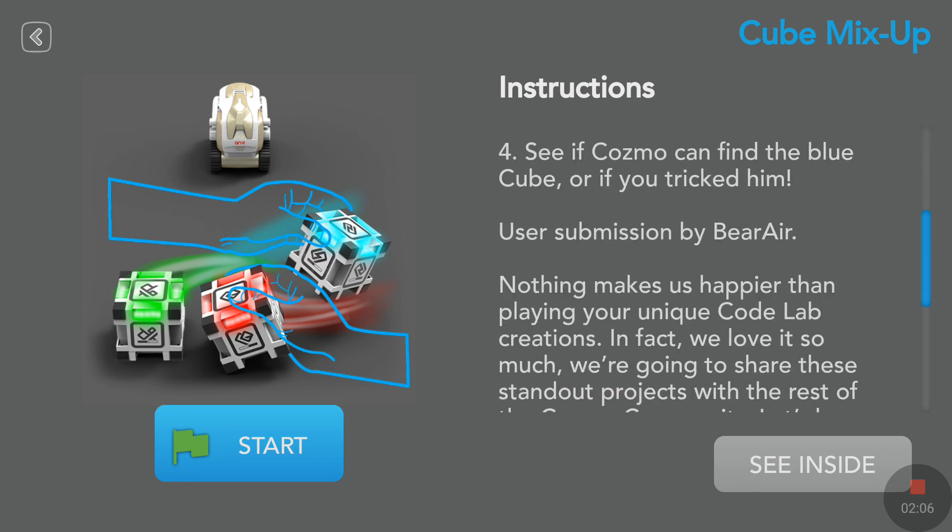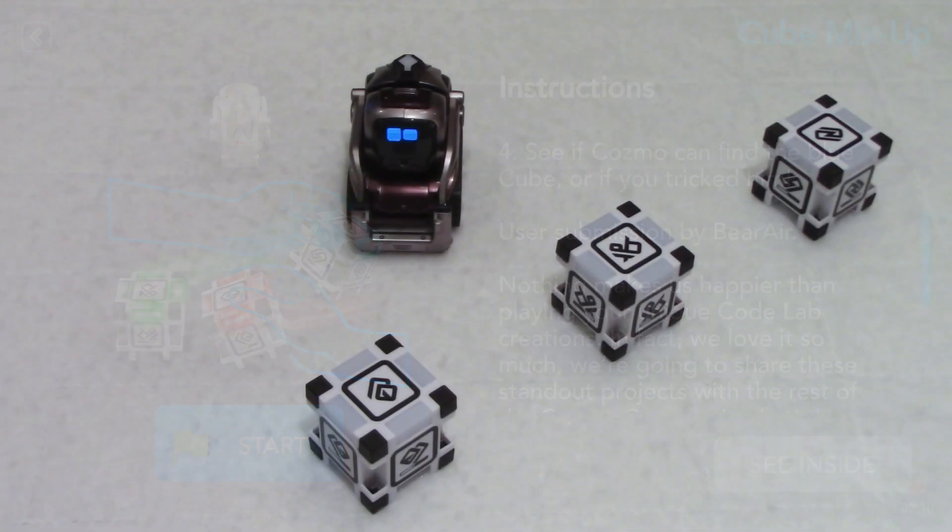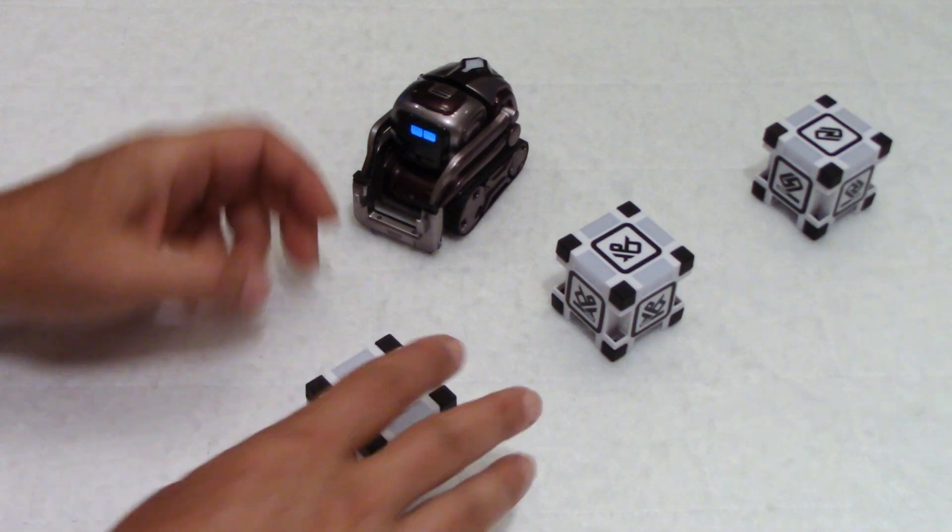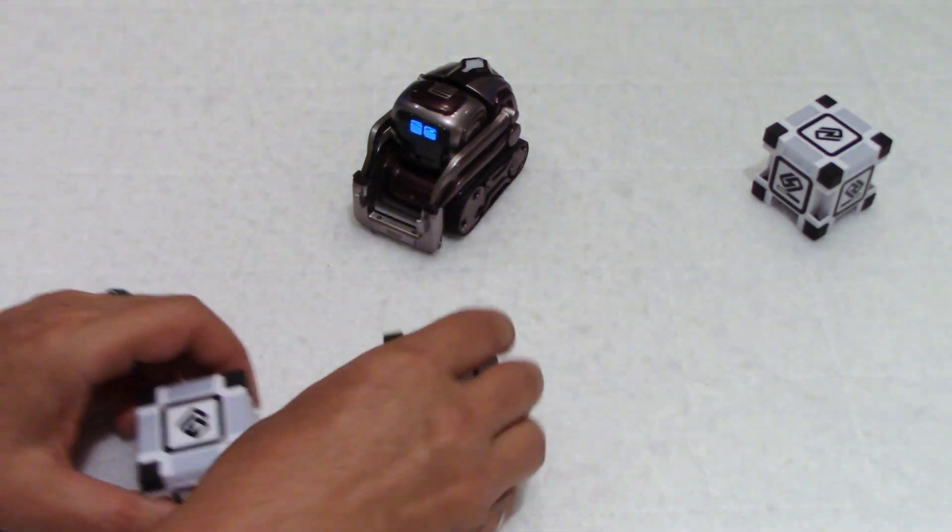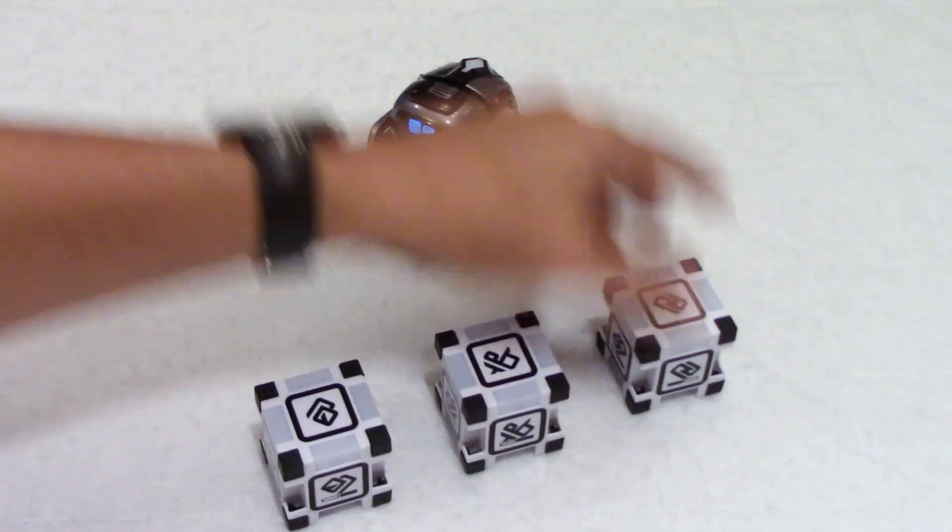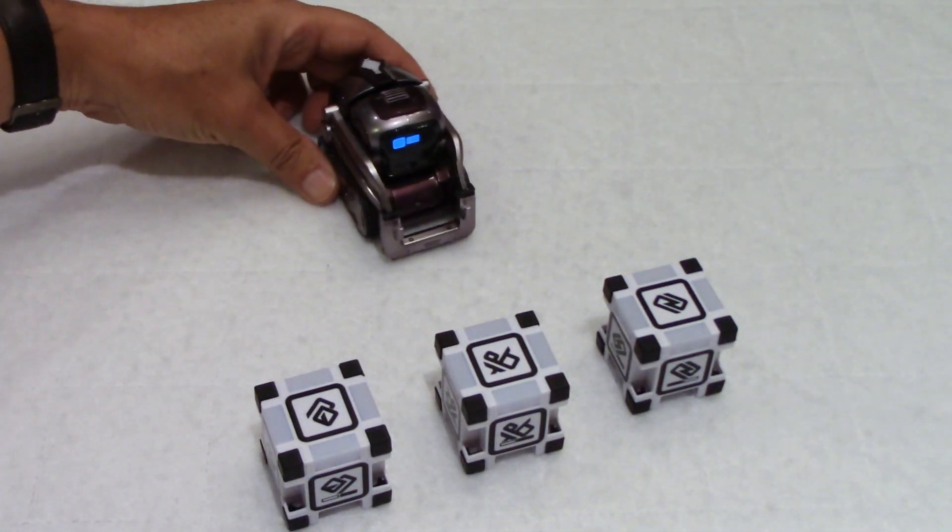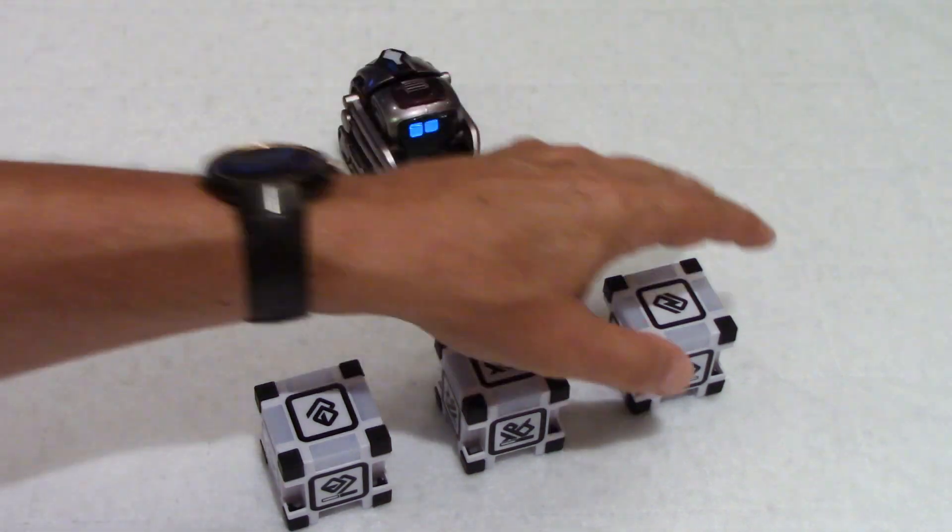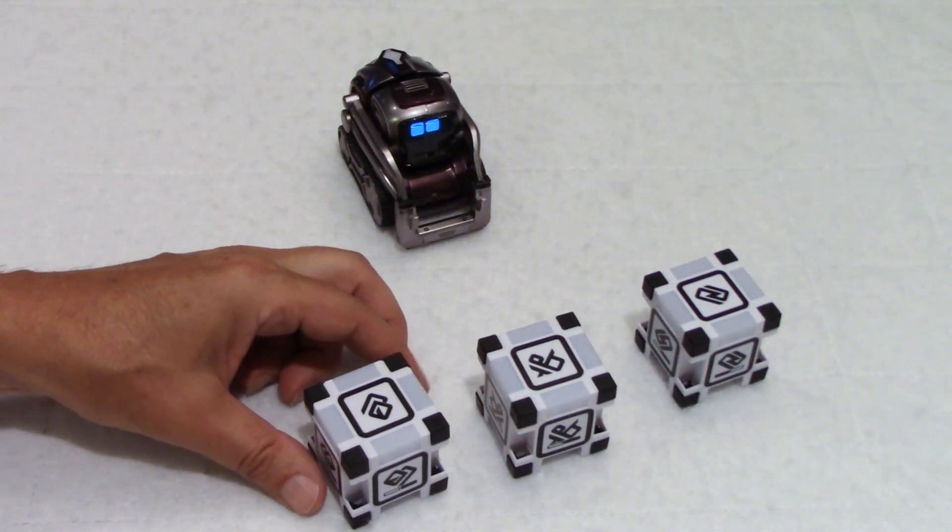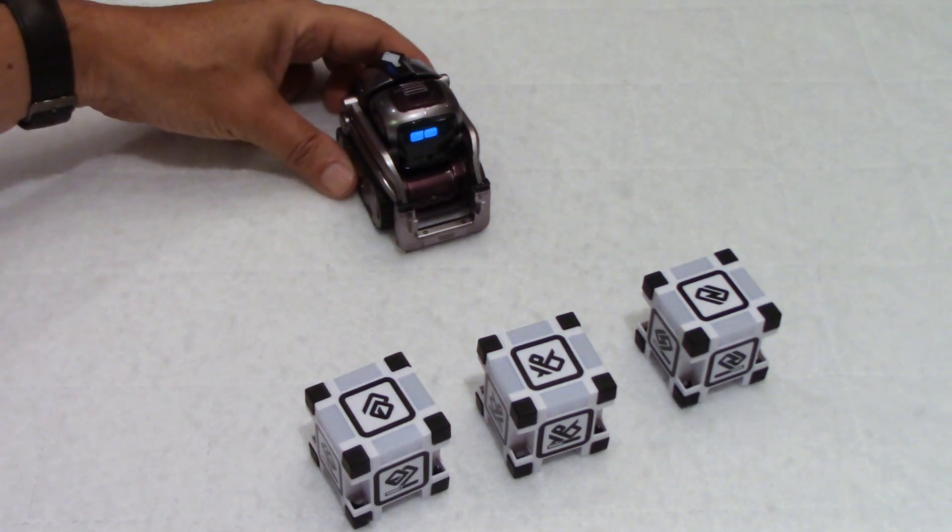User submission by Bear Air. Okay, so before we tap on the start flag, let's put the cubes between myself and Cosmo, just like that. A bit more space, and Cosmo in front of the cubes.